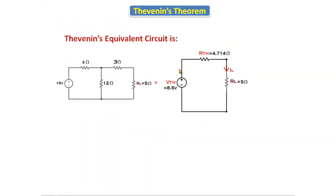Now we substitute all values into the equivalent circuit. VTH = 8.5 volts, RTH = 4.714 ohms, and RL remains as given. This is the total Thevenin's equivalent circuit.